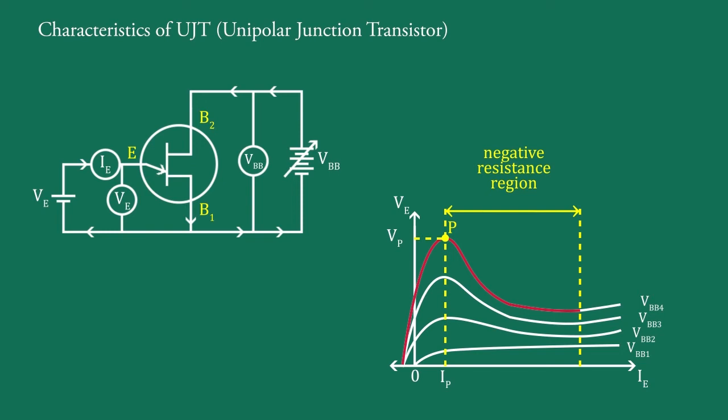The negative region of the curve is ended at valley point B, having valley point voltage VV and valley point current IV.